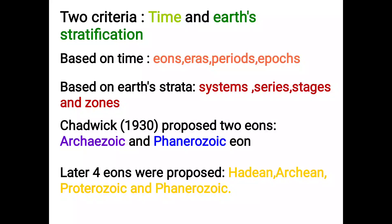Two ions are proposed. Ions are divided into eras, and eras are divided into periods. The largest unit is the ion. Within an ion, we divide the era, and the eras are further divided into periods.